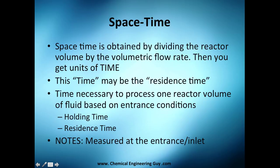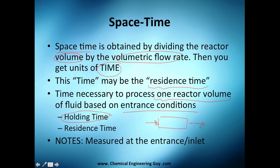Spacetime is obtained by dividing the reactor volume by the volumetric flow rate, then you get units of time. This time means the residence time or holding time - the time necessary to process one reactor volume of fluid based on the entrance condition. It's kind of abstract, but it's the time to process that fluid unit. Once again, it's measured at the entrance or inlet, so you have your volumetric flow rate in and out. Be sure to reference it to this one here.